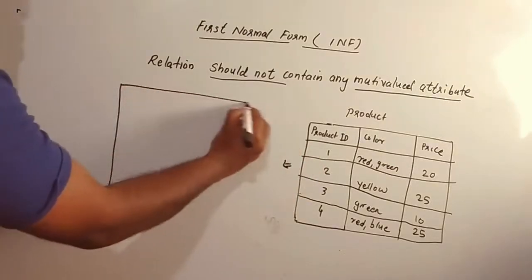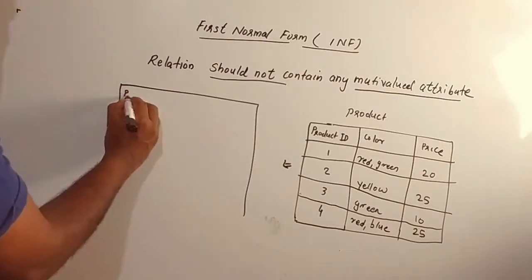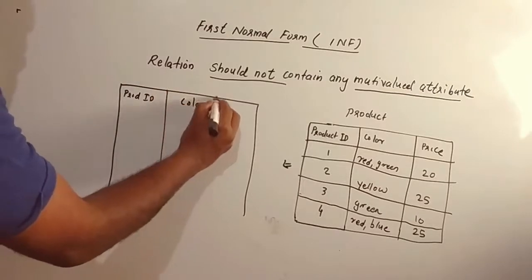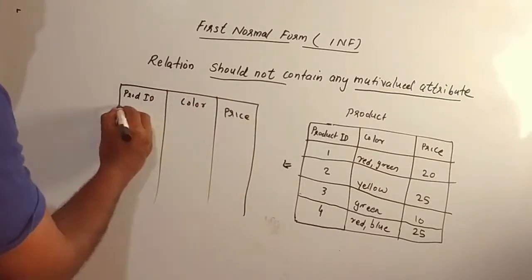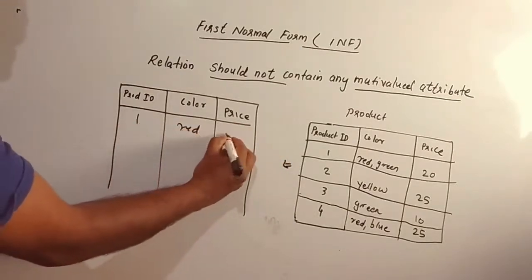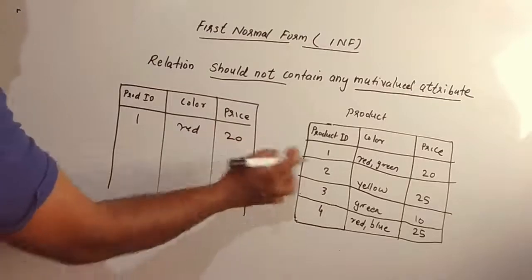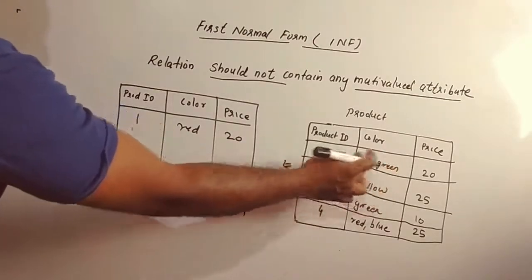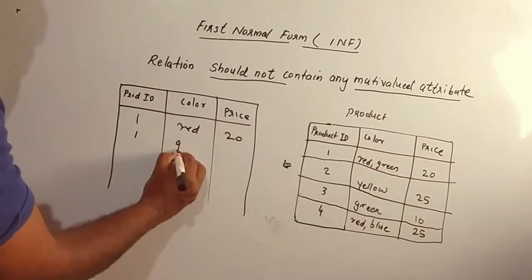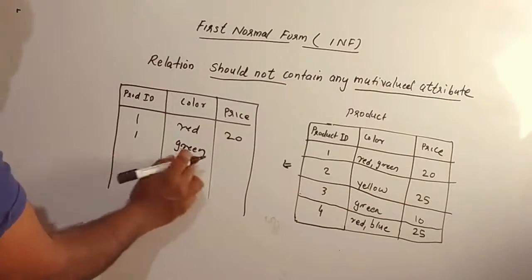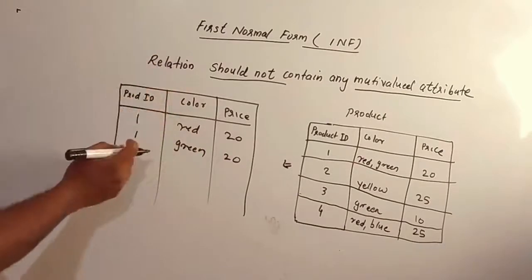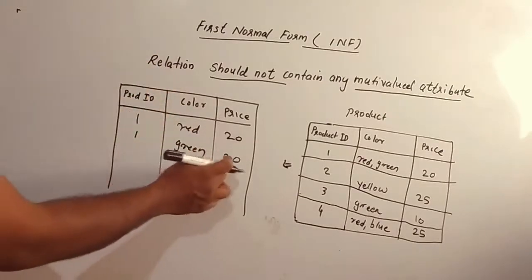Now let's return to the previous table. We have product ID, color, and price. One product ID, one color: red, price 20. The same product ID has the same price — product ID 1 with one color per row.